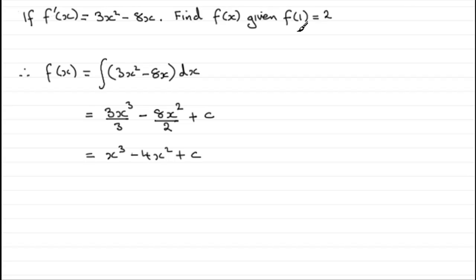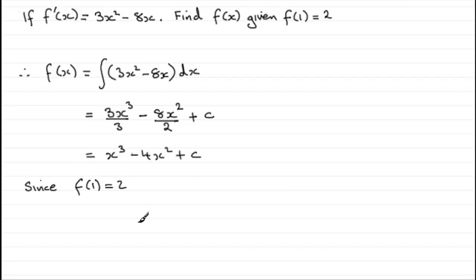In other questions it might say that the curve passes through the point (1, 2). When x is 1, we know that the corresponding y-coordinate — if y equals f(x) — would be 2. So since f(1) equals 2, we can substitute this in and we get: 2 equals 1 cubed minus 4 times 1 squared plus c.